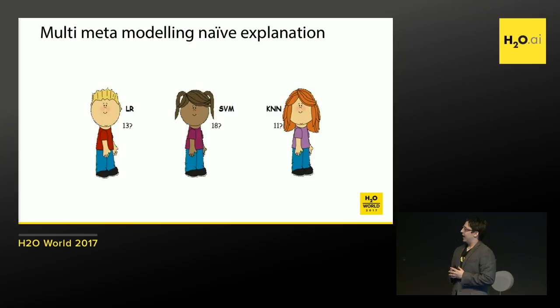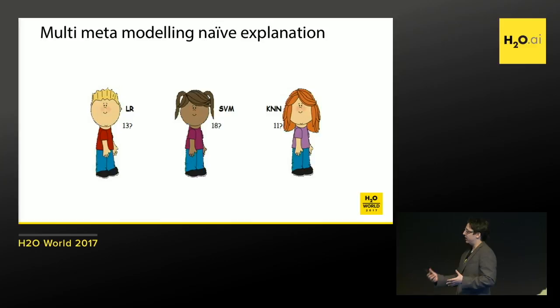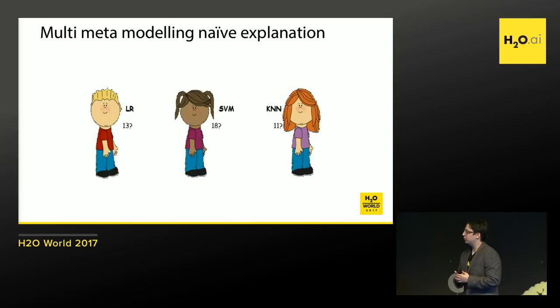I would like to start with a very naive, simple example about how multi-meta modeling works. When I say meta-modeling, it's how we use models as input to other models to make predictions. And multi here means how we can do that multiple times. I want to start with a very simple and naive example,